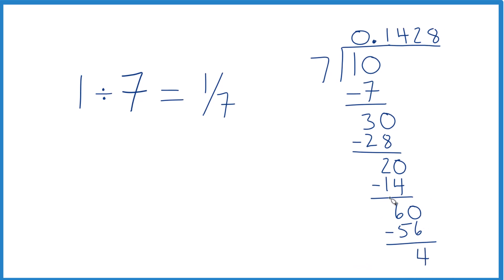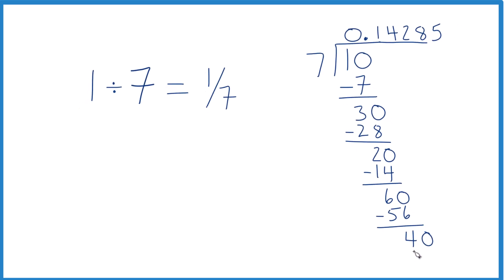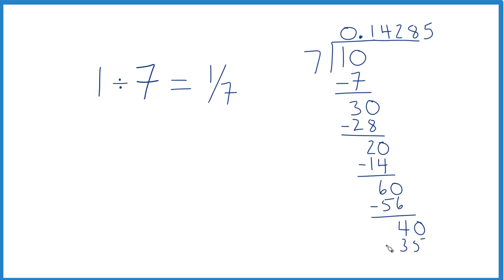Doesn't go into 4. Call it 40. Move over 1. 7 times 5, that's 35. Subtract, move over, we get 5.